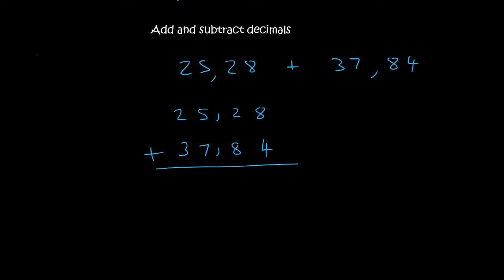And so now we just add. So 8 plus 4 is 12. 2 plus 8 is 10 plus the 1 is 11. You then put your comma. 1 plus 5 is 6 plus 7 is 13. And then 1 plus 2 is 3 plus 3 is 6. So 63.12.